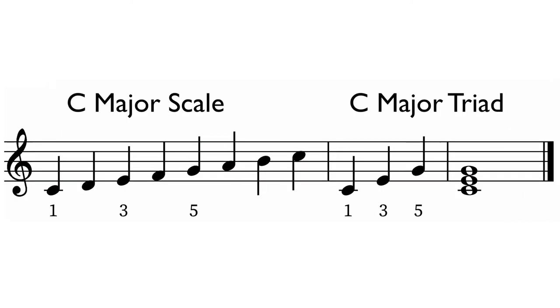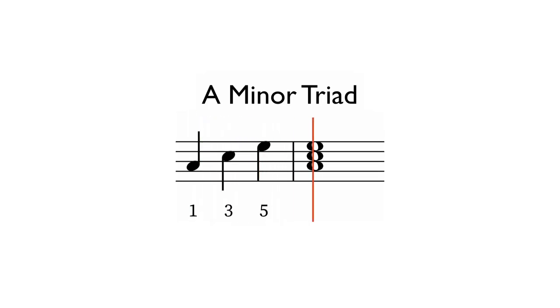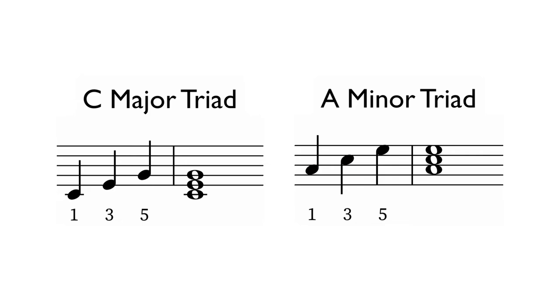And C major triad comes from C major scale. We also use the terms A minor chord and C major chord. Let's look at the intervals in major and minor chords to see what's unique about them. The C major triad or chord has the intervals of a third and a fifth. And the A minor triad has the intervals of a third and a fifth. But their quality is different. The difference is in the quality of the thirds.